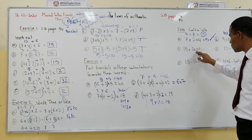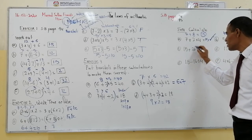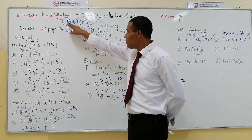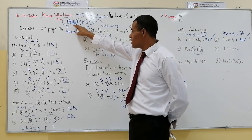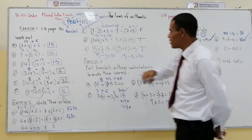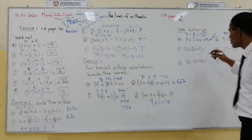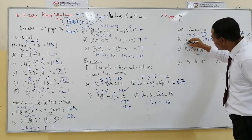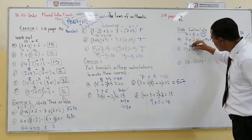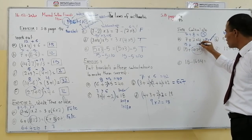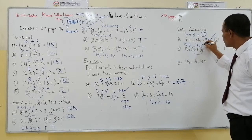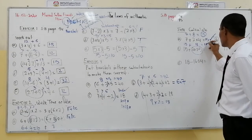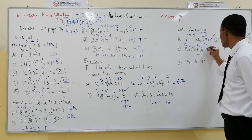Here we have 15 plus 20 divided by 5. Using order of operations, no brackets, no indices, so we move to division first: 20 divided by 5 gives 4. Then 15 plus 4 is 19. The answer is 19.